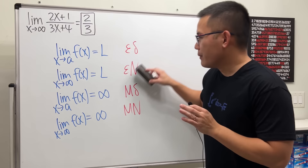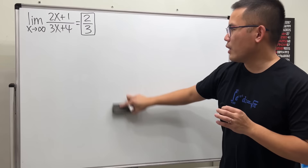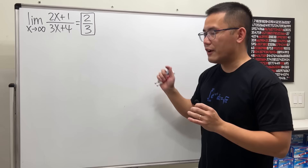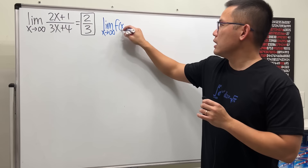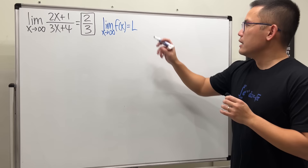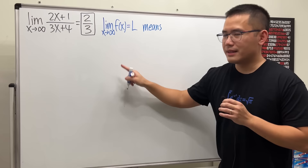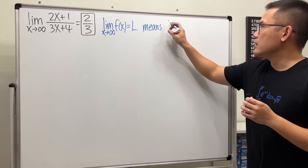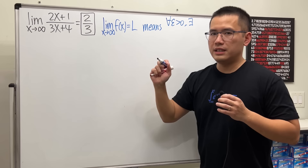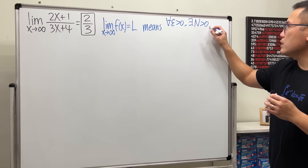So let me give you the definition, then we will write the proof, and at the end I'm going to use a specific epsilon so you'll see how everything works. Today we have the limit as x approaching infinity of some function equal to a finite limit L. L is finite, so we use epsilon. For all epsilon greater than zero, there exists some capital N greater than zero, such that...